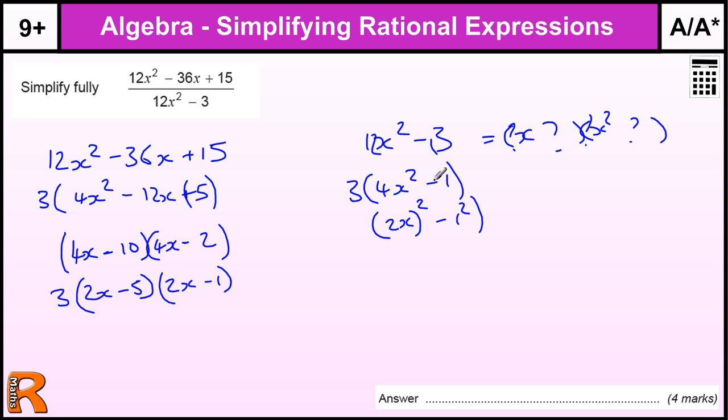Sorry, take away 1 is take away 1 squared. So, we've got this difference of two squares, which is going to be 2x plus 1 and 2x minus 1.